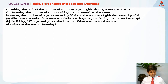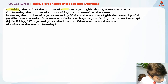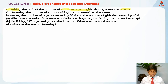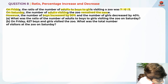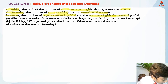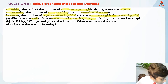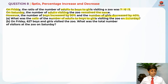Let me highlight the key information in this question. On Friday, the ratio of the number of adults to boys to girls visiting a zoo was 7 is to 6 is to 5. Let's write down the ratio for Friday first: adults is to boys is to girls is 7 is to 6 is to 5.